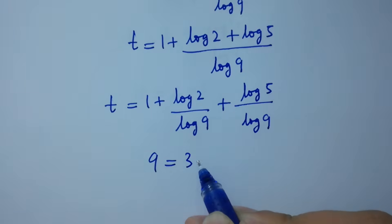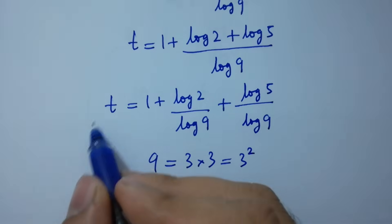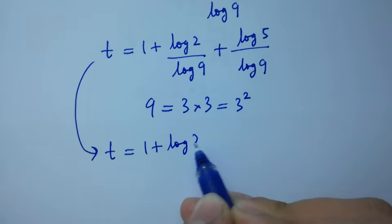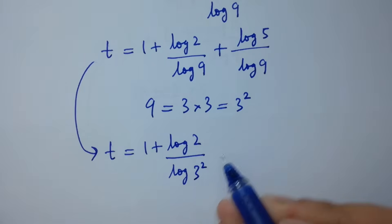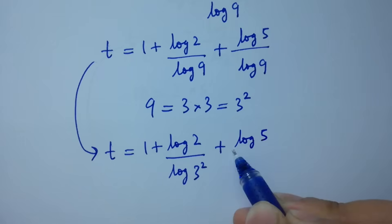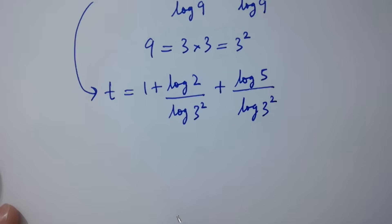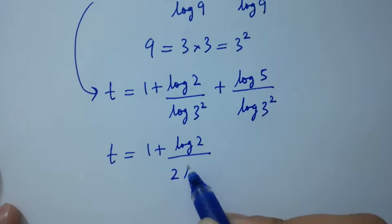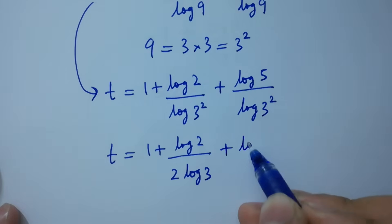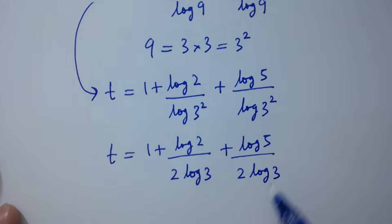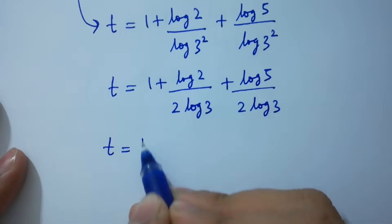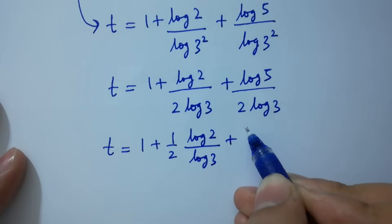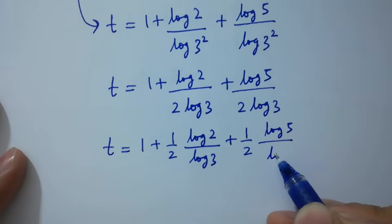Since 9 equals 3 times 3, which is 3 squared, we have t equals 1 plus log 2 over log 3 squared plus log 5 over log 3 squared. Applying the power rule, t equals 1 plus log 2 over 2 log 3 plus log 5 over 2 log 3, which gives t equals 1 plus one-half log 2 over log 3 plus one-half log 5 over log 3.